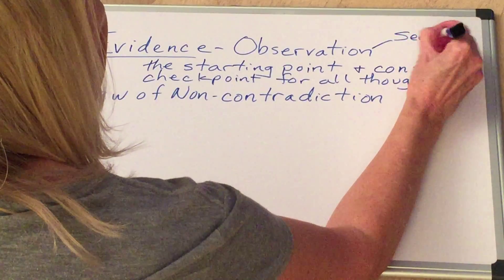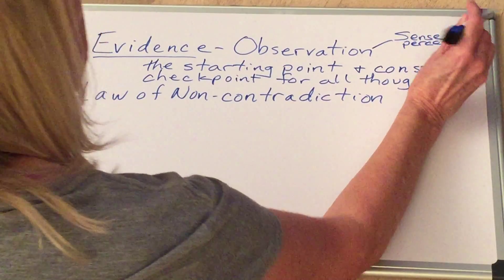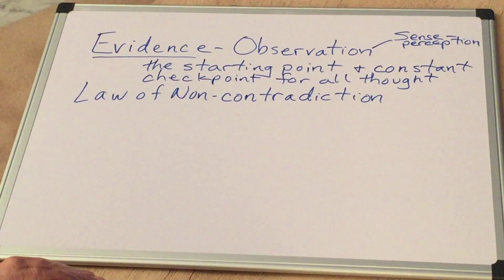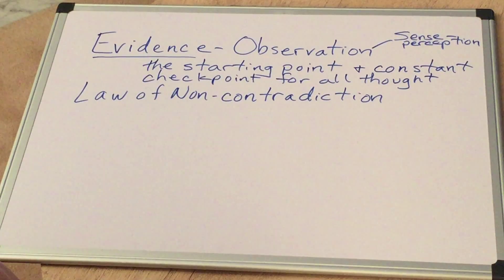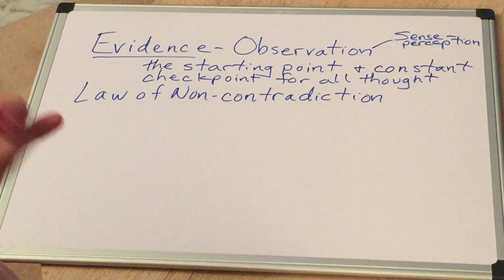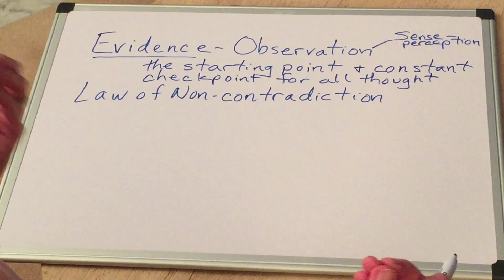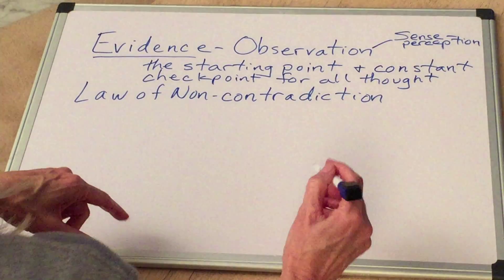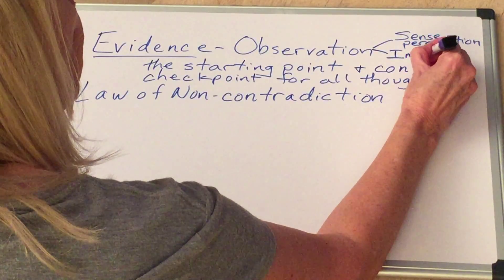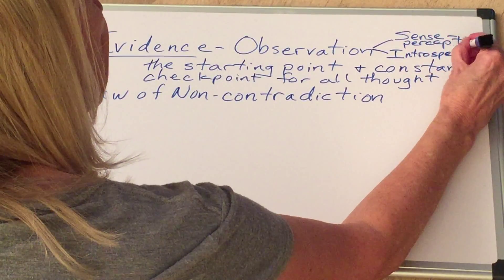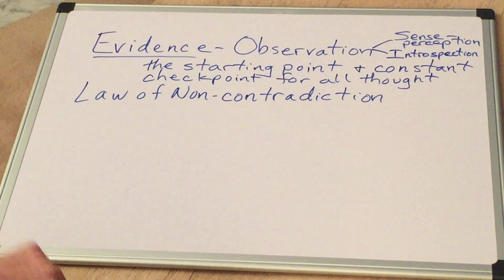But there's one other kind of observation besides sense perception and that's how do you know what you're thinking? Can you know directly what thought is going through your mind or what you're imagining or what you're feeling? You don't see your thoughts, you don't use your sense of touch to know your thoughts. You use something called introspection. Each of us has that ability to observe directly the contents of our own mental processes. So those two basic sources of observation.